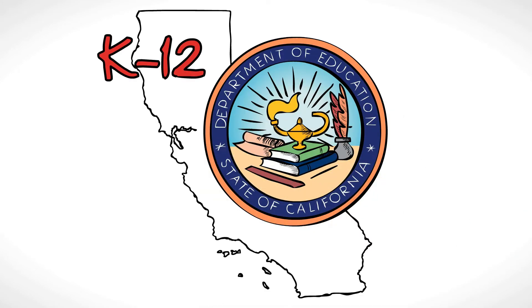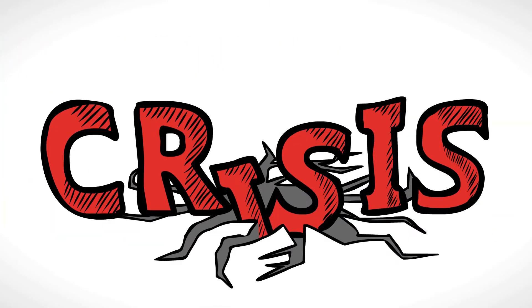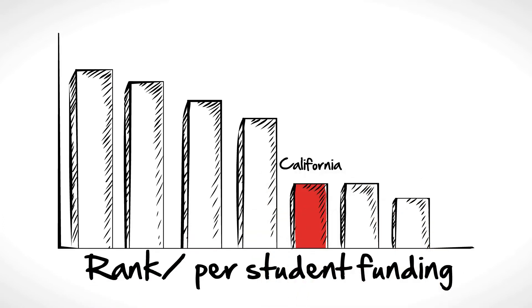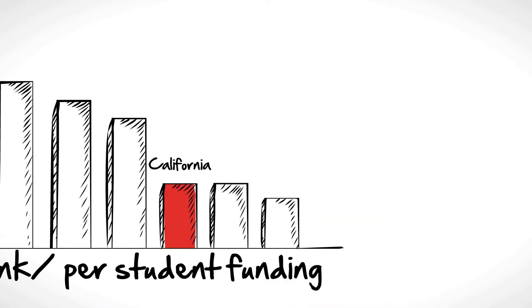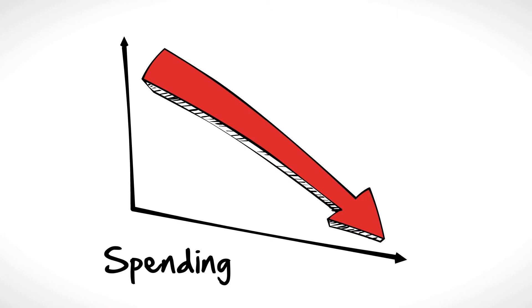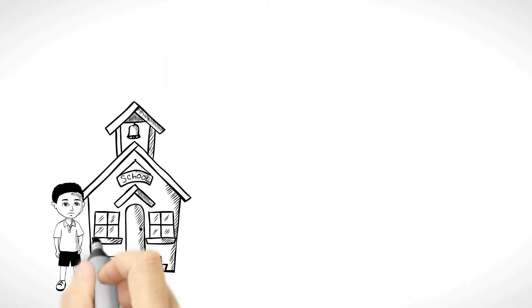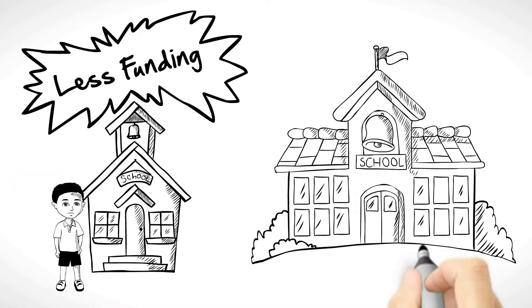K-12 education in California is in crisis. Not only does California rank near the bottom in per-student funding, and spending has been drastically cut, but students in low-income schools receive less funding than kids in well-to-do neighborhoods.